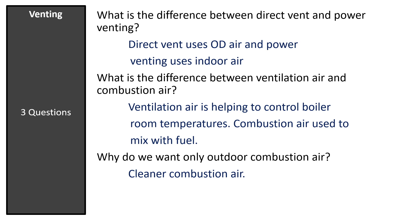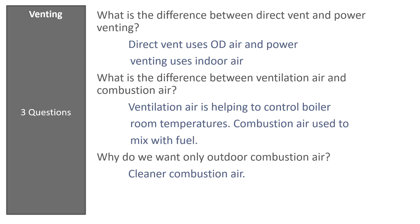The difference is: direct vent means two pipes to the outside — one for venting the products of combustion, the other for air intake. Power vent is one pipe to the outside for venting products of combustion, and indoor air is used from the structure. As homes become tighter and boiler rooms become smaller, using outdoor air will supply the boiler with the proper amount of clean combustion air.